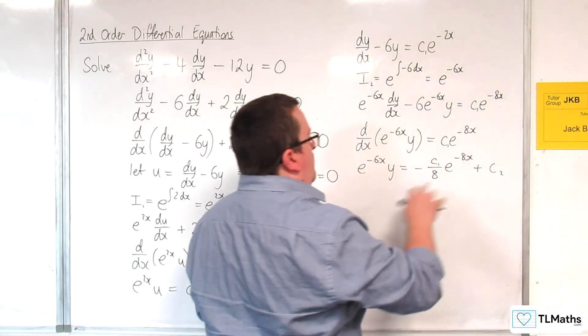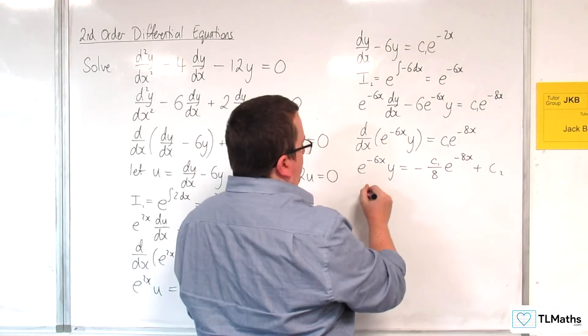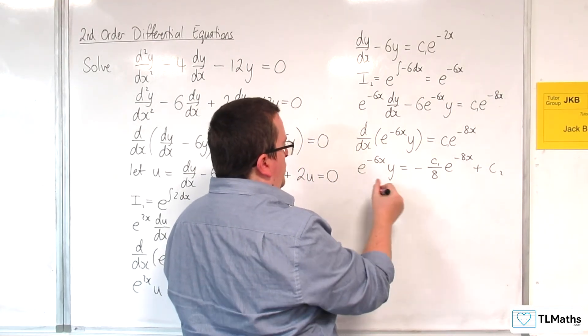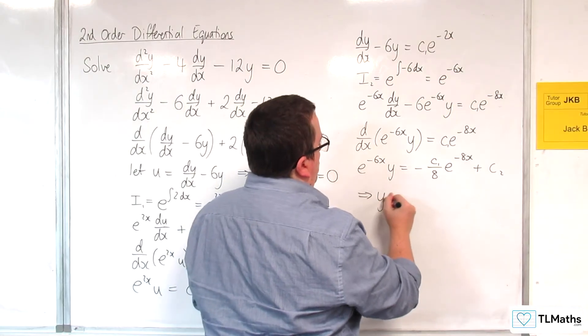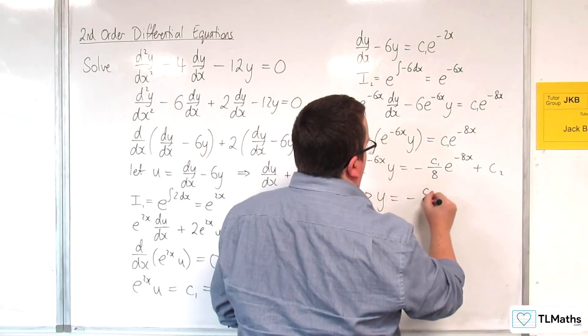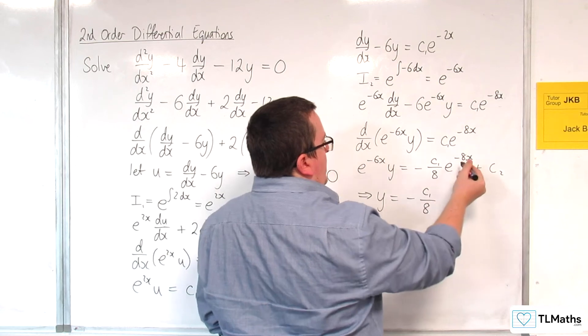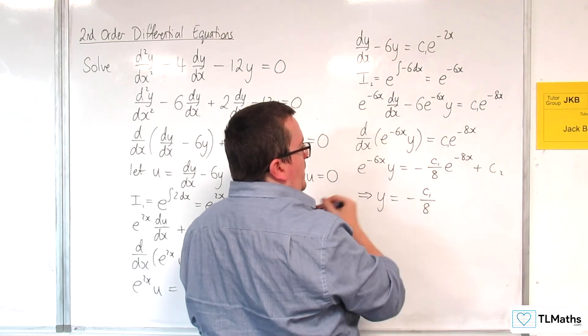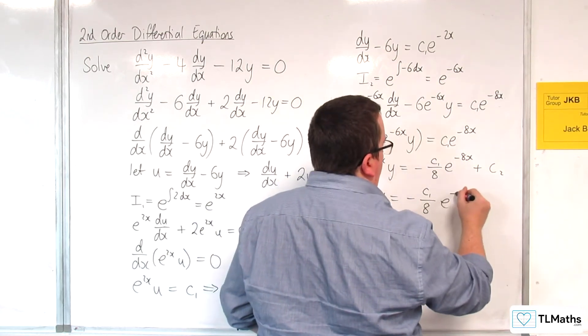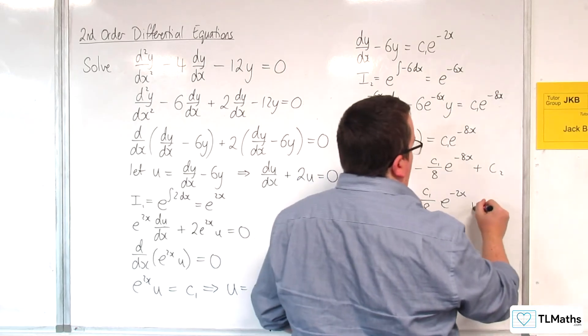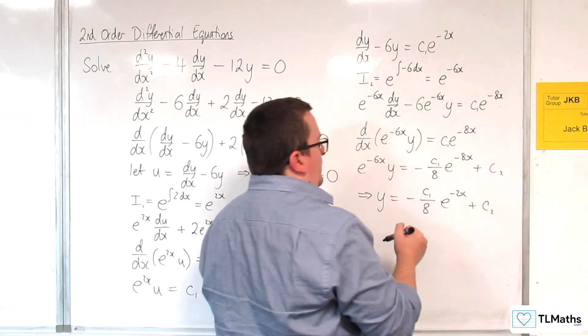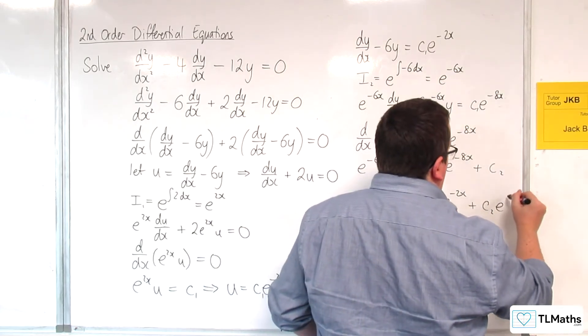At this point, I'll multiply through by e^(6x), or divide through by e^(-6x), whichever you prefer. And this can be y = -c₁/8·e^(-2x) + c₂e^(6x).